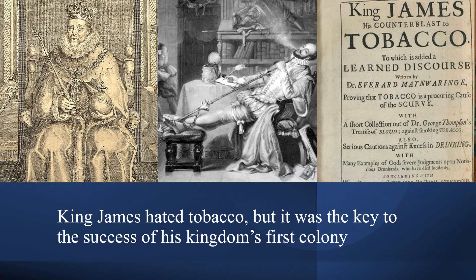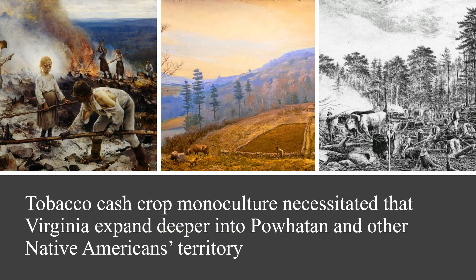Tobacco, though profitable, had some major downsides. In addition to its deleterious health effects, tobacco has no nutritional value for humans — we can't eat it to survive the way we could eat corn or some other crop. Nonetheless, tobacco farmers grew this plant, engaging in monoculture agriculture, stopping the growth of food crops, meaning that the colony, though profitable, was now even more dependent on the mother country than it had been at its beginning. Tobacco also consumes a lot of nutrients, wearing out the soil, forcing the colonists to abandon their depleted fields and expand deeper into the territories of the Powhatan and other tribes, leading to more wars between natives and colonists.